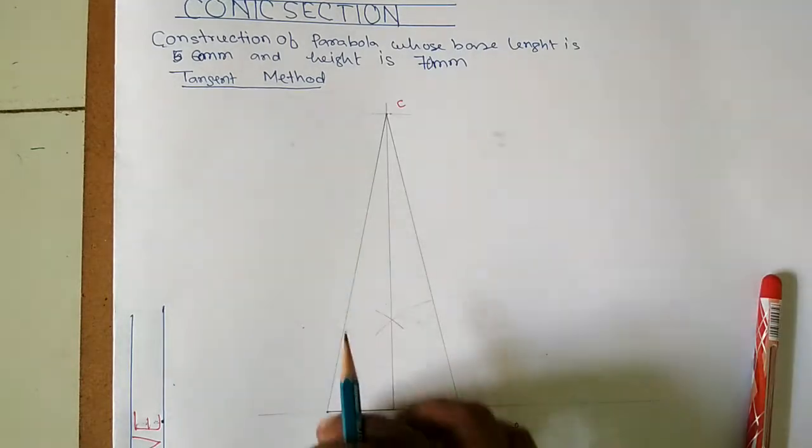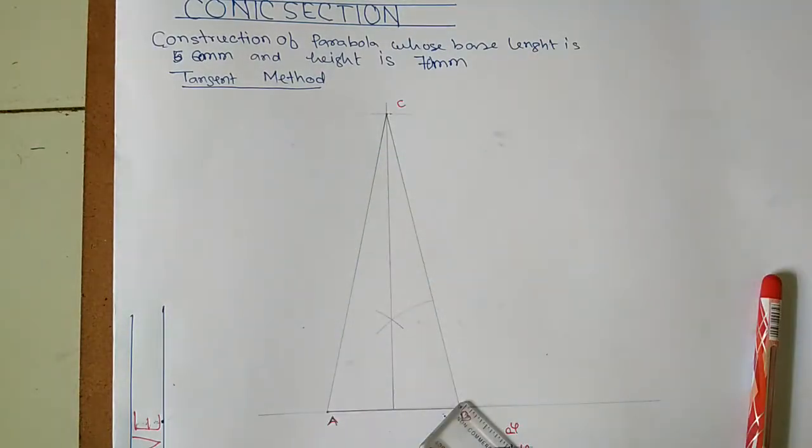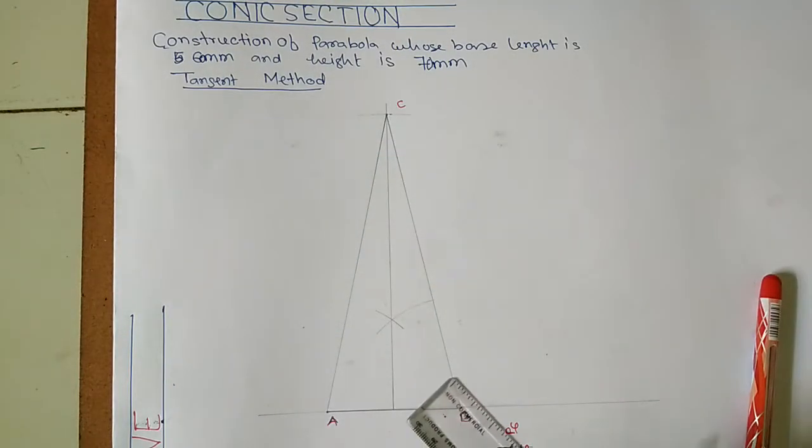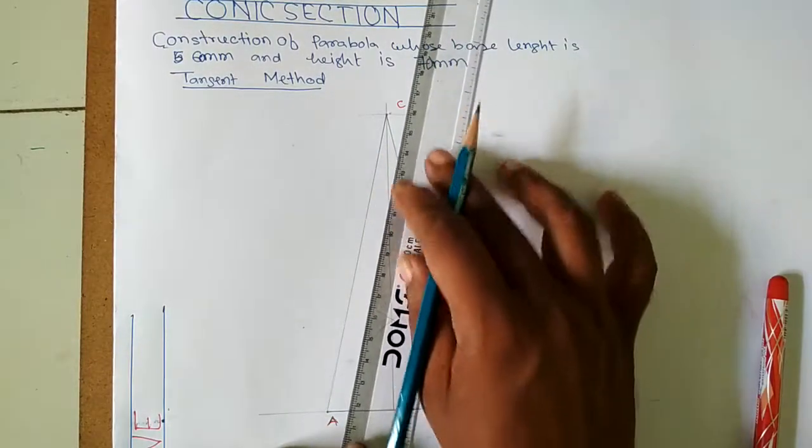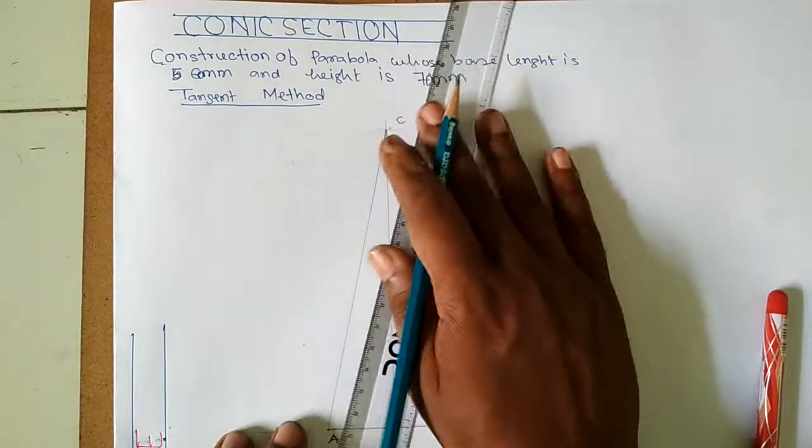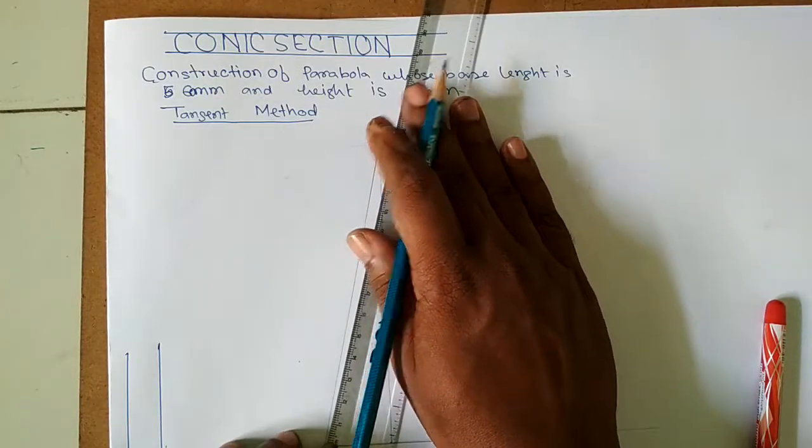Now we will divide AC length into some equal parts. First of all we will measure it and for our convenience we will check how many equal parts we can divide.